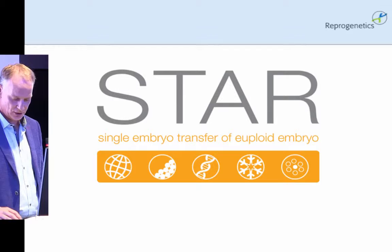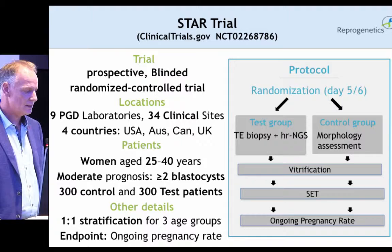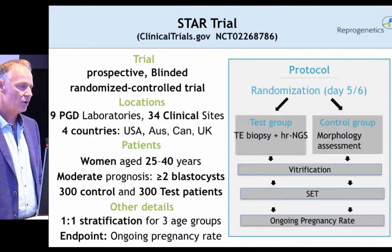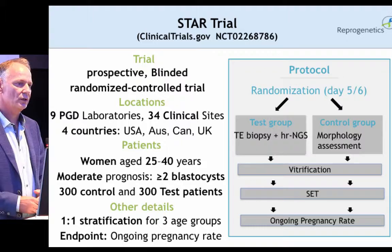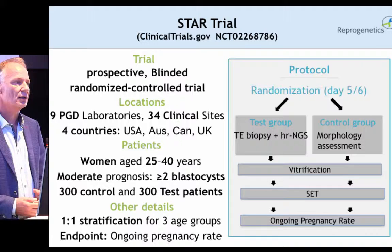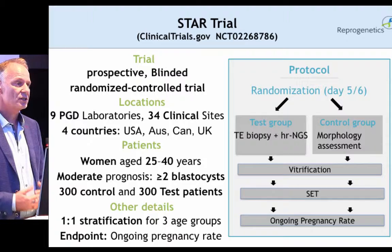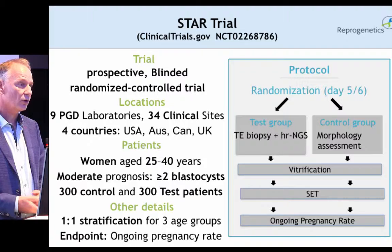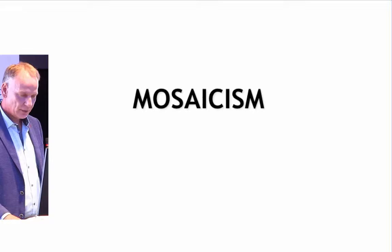There is another randomized trial that has finished recruitment. It involves nine PGD labs, 34 clinical sites in four countries — US, Australia, Canada, and UK — and patients 25 to 40 years of age with two or more blastocysts. Unlike previous trials done on good prognosis patients, this involves the average patient you would find in your clinic. It consists of 300 controls and 300 tests. All have been randomized and we are just collecting pregnancy data now. We think by December we'll have all the data and be able to present it at ASRM.